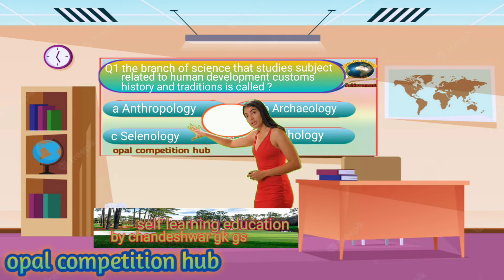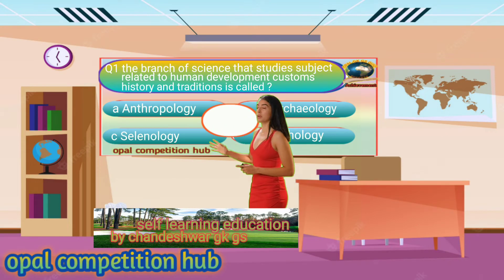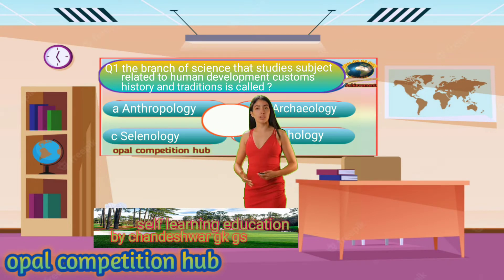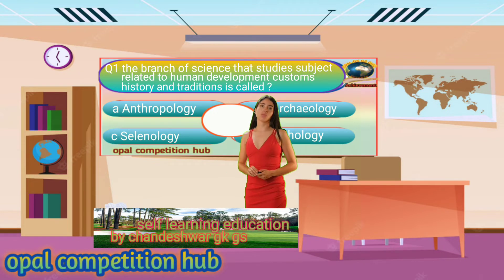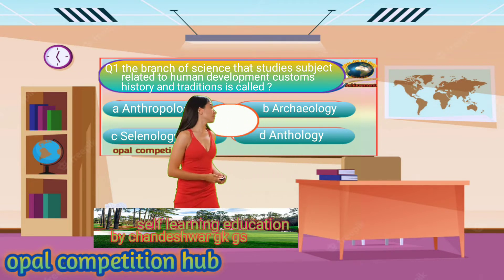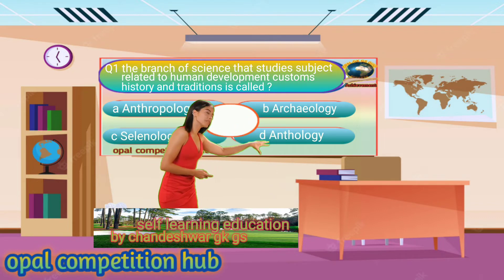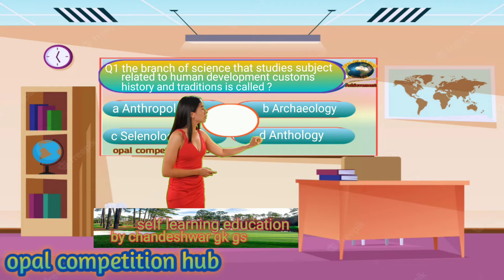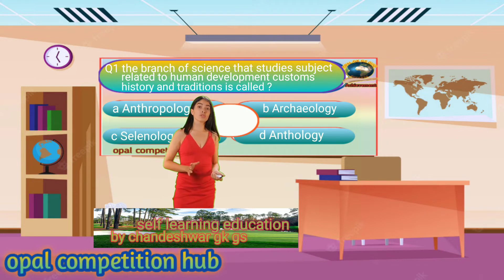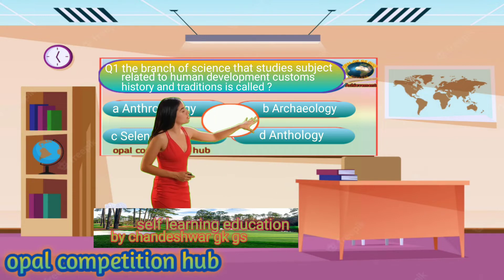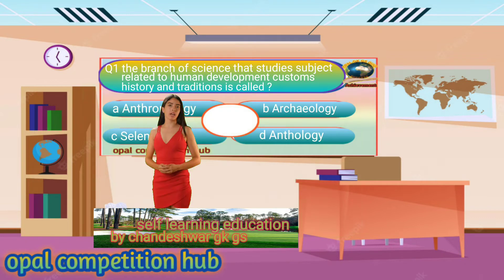Question number 1. The branch of science that studies subjects related to human development, customs, history and traditions is called. Your options are: Option A. Anthropology, Option B. Archaeology, Option C. Selenology, Option D. Anthology. Your time starts now.